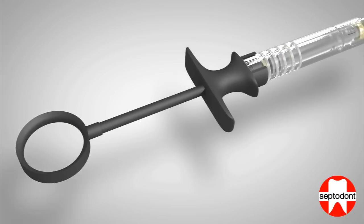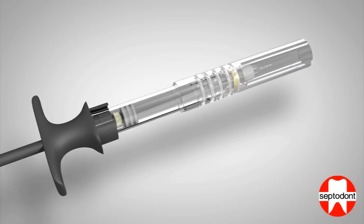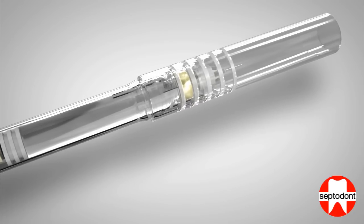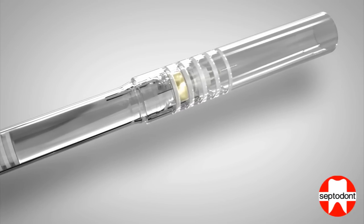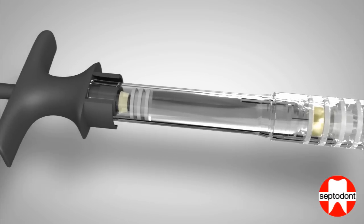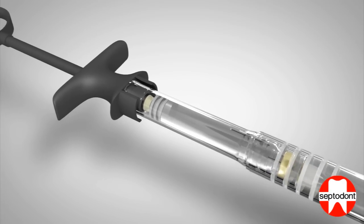If at any time during the injection procedure the device needs to be placed on the bracket table, the needle can be protected by sliding the protective sheath gently forwards until resistance is felt. At this point, gently ease the sleeve further forward into the holding position.